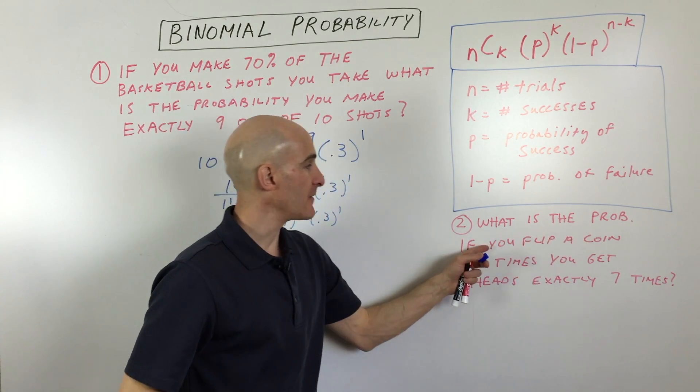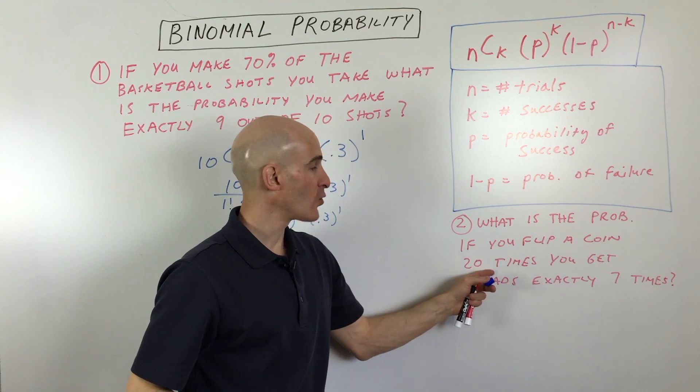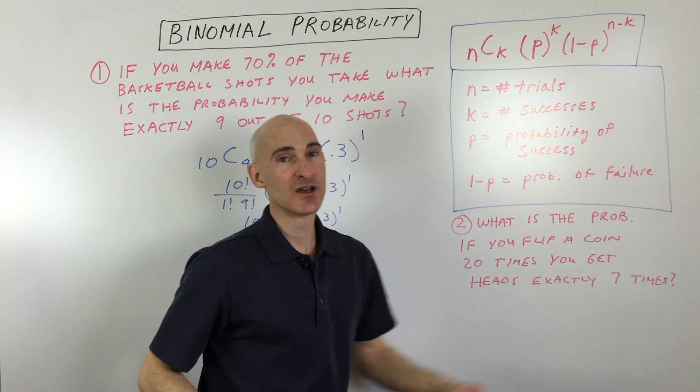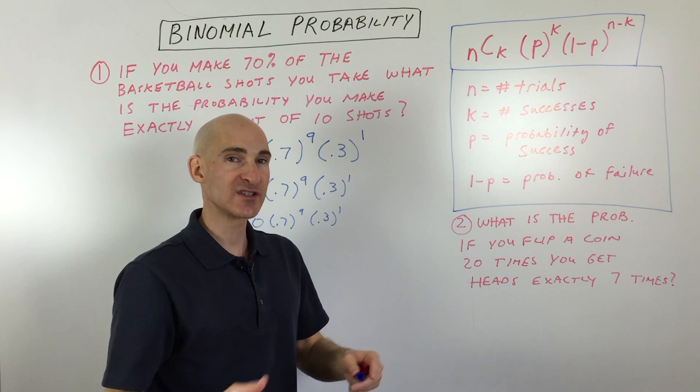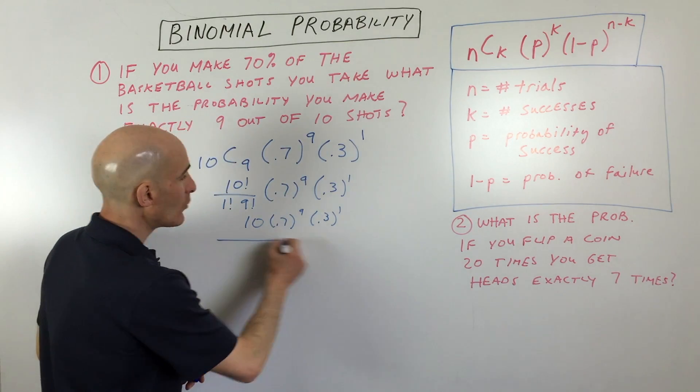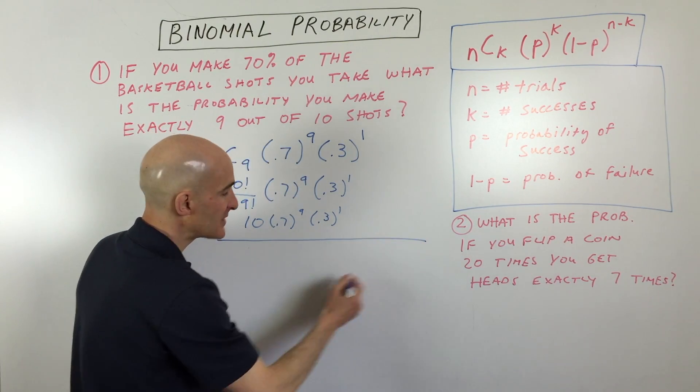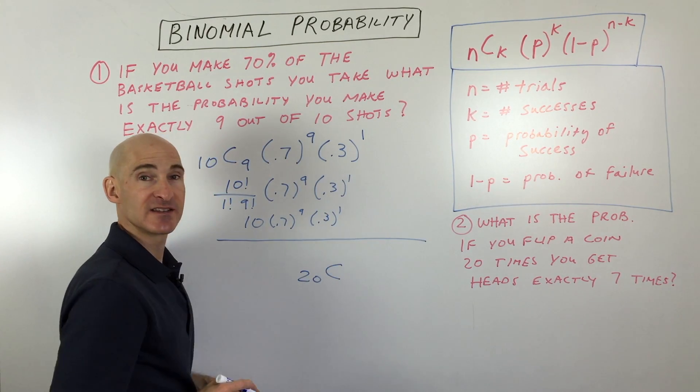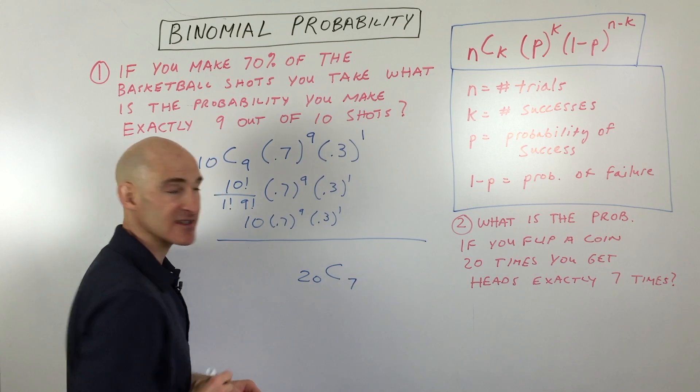What is the probability that if you flip a coin 20 times, you get heads exactly seven times? So we're not saying seven or more, we're just saying exactly seven. So same idea here. What we're going to do is we're going to say 20 times. So that's 20 trials. So you can see n is 20. And we want to get heads exactly seven times. So k is seven.